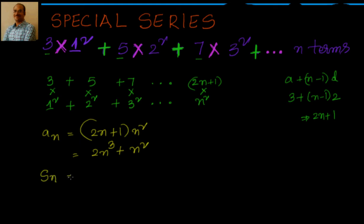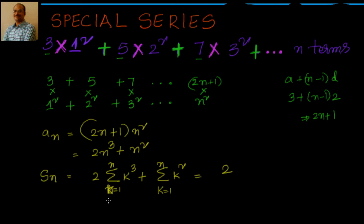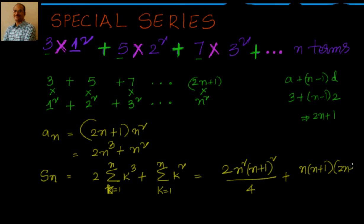I want Sₙ, the sum of all n terms, so I apply sigma. Sₙ = 2·Σk³ + Σk². The sum of cubes of first n natural numbers is n²(n+1)²/4, and the sum of squares is n(n+1)(2n+1)/6. So Sₙ = 2·[n²(n+1)²/4] + [n(n+1)(2n+1)/6]. Now we simplify.